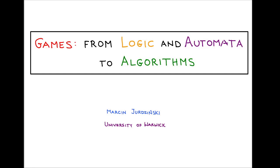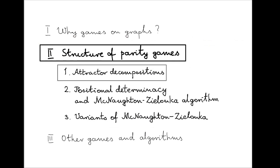Welcome back to the tutorial on games. In the first part of this tutorial we have seen several applications of games on graphs in automata theory, in logic, verification and synthesis. We have highlighted the importance of parity games and positional determinacy of parity games, which plays a crucial role in certain difficult automata theoretic constructions. And we have highlighted the importance of developing efficient algorithms for solving parity games.